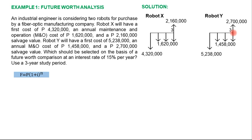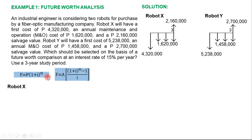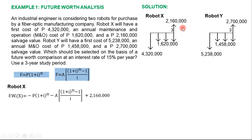These are the important formulas to use: the single payment formula and the recurring payment formula, both used to determine the future worth of current money. For Robot X, the single payment formula applies to the 4,320,000 initial cost, and the recurring payment formula applies to the 1,620,000 annual cost. The salvage value of 2,160,000 does not need conversion because it is already at year three — it is already a future value.